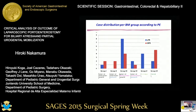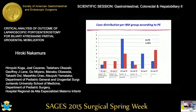This slide shows case distribution for 3BM groups according to type of PE. Blue shows laparoscopic PE; red shows open PE. Laparoscopic PE had a higher incidence of group 3 cases. Overall outcome of laparoscopic PE may be worse than open PE because of lower incidence of group 1 and 2 cases.